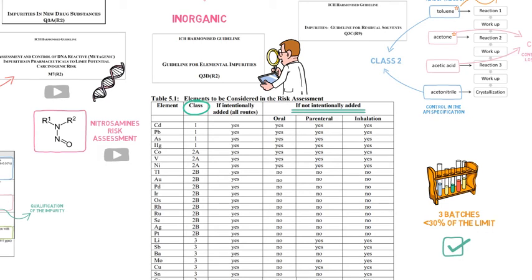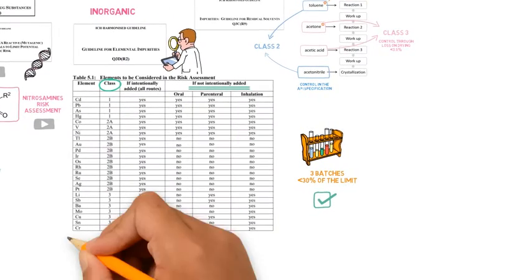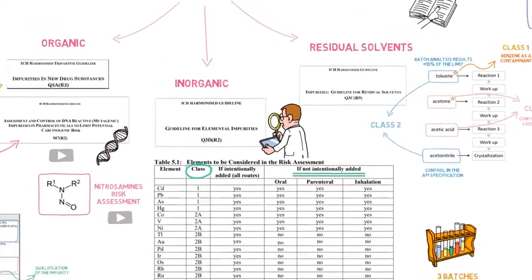Other inorganic elements of low toxicity, such as sodium, potassium, chlorine, can be controlled through non-specific methods, such as residue on ignition or sulfated ash.